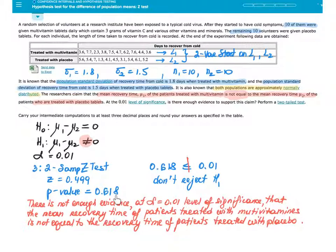Using the p-value approach, I just need to compare the p-value to alpha. Because the p-value of 0.618 is not less than or equal to alpha of 0.01, I don't reject the null hypothesis. There is not enough evidence at the alpha equals 0.01 level of significance that the mean recovery time of patients treated with multivitamins is not equal to the recovery time of patients treated with placebo. It doesn't seem that multivitamins played an important role in recovery times.